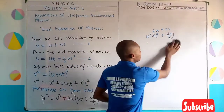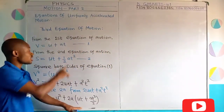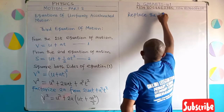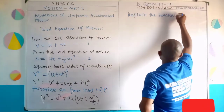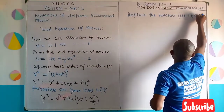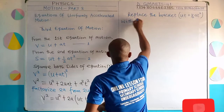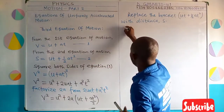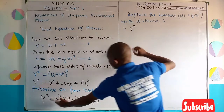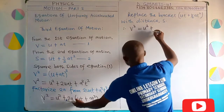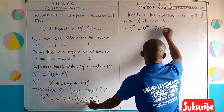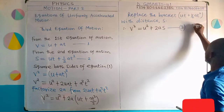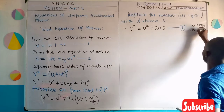So what I will do is simply substitute for this whole bracket. In place of the bracket, which is UT plus one-half AT squared, I will replace it with S — the distance, which is our second equation of motion. Therefore, what we get is V squared equal to U squared plus 2AS. And this is the third equation of motion, equation 3.